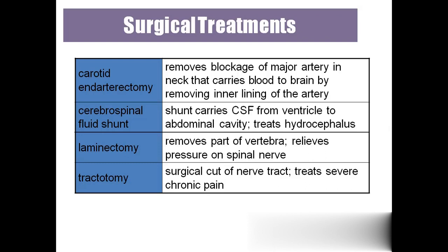'Laminectomy' — if there is any pressure on the spinal cord, they will remove a part of the vertebra; that we call laminectomy. 'Tractotomy' is a surgical cut of the nerve tract to treat severe chronic pain.